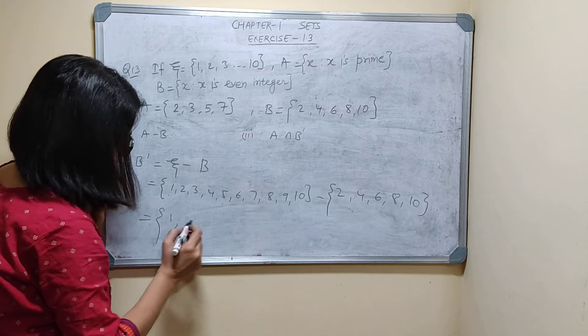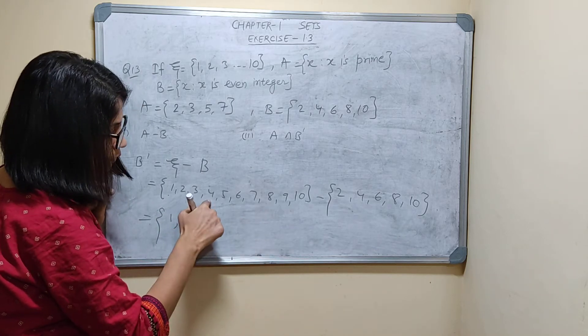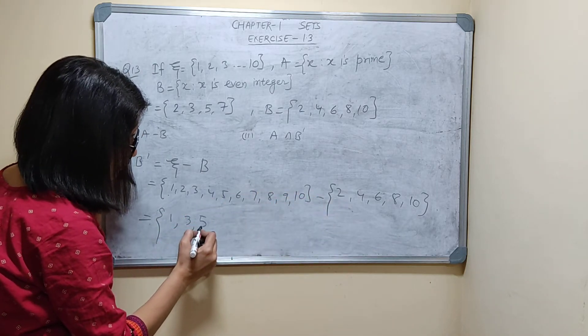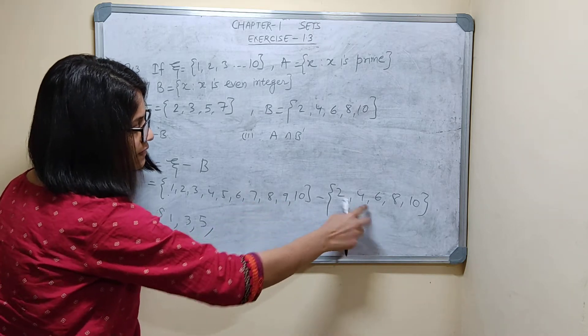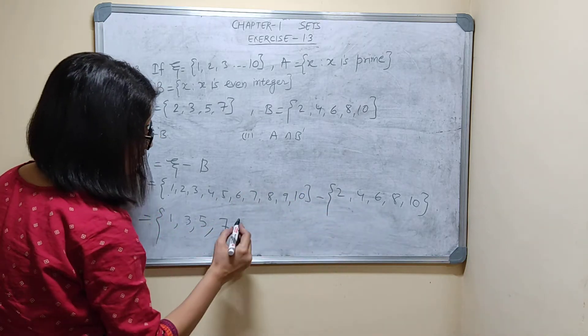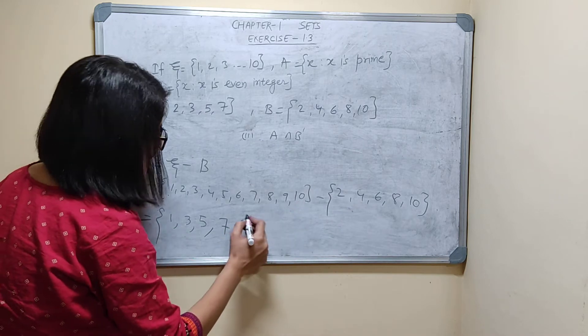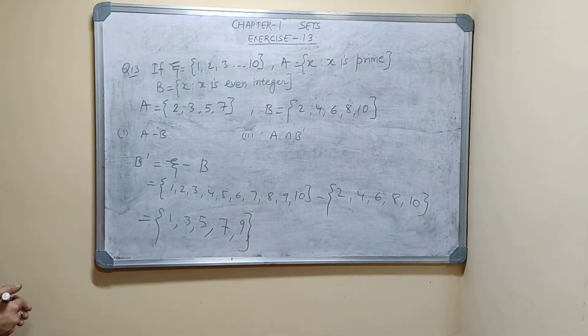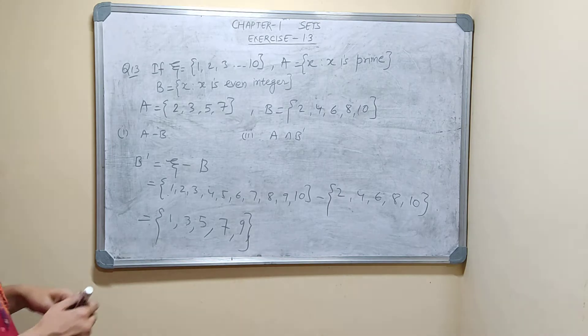2 is here, 2 is here, I can't write. 3. 4 is here, 4 is here, I can't write. 6 is here, 6 is here, I can't write. 7. 8 is here, it is there, I can't write. 9. 10 is here, I can't write. So 1, 3, 5, 7, 9 B dash.